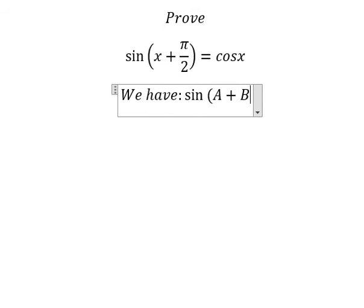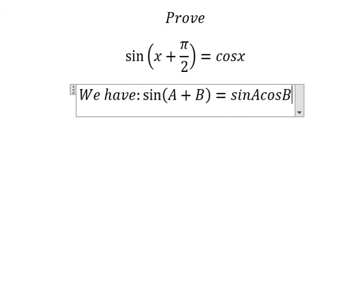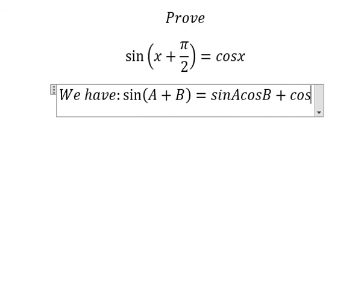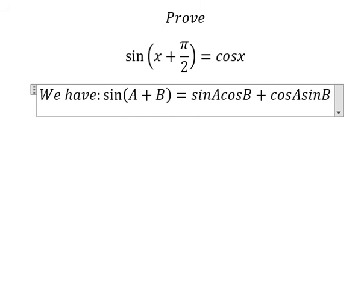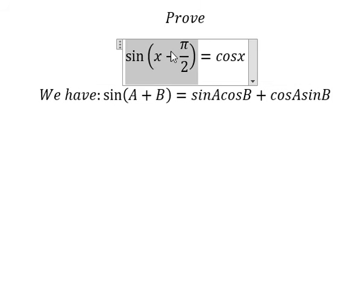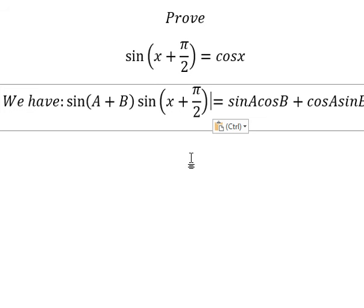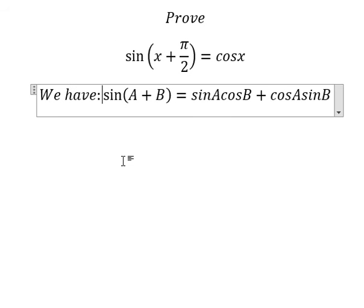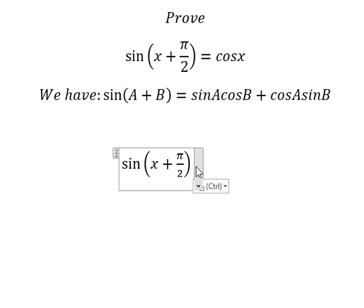We apply this formula: sin(A)cos(B) + cos(A)sin(B). We get A = x and B = π/2.